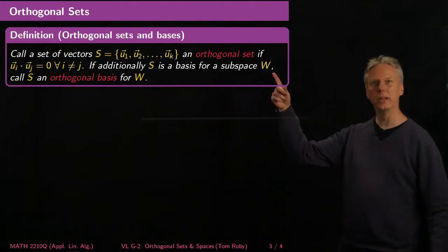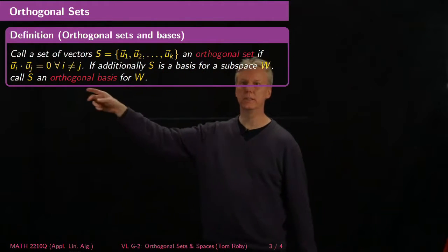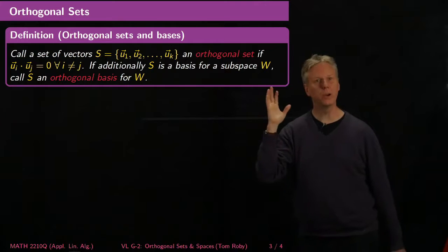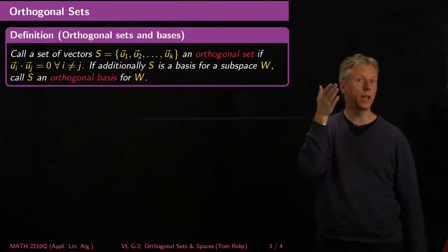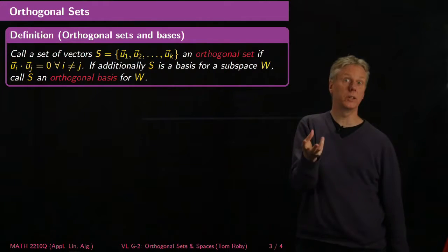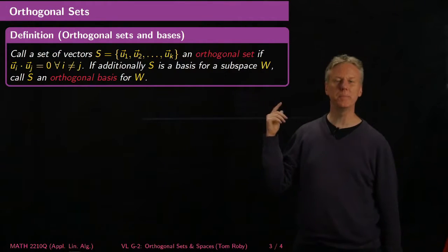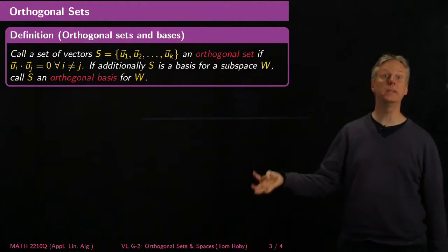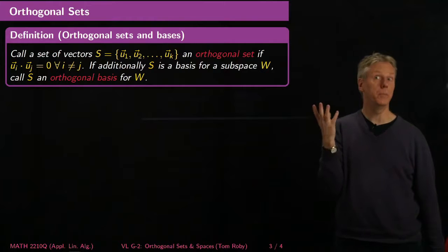Here's the definition of an orthogonal set and bases. We'll call a set an orthogonal set if any time I take two different vectors in the set and dot them with each other, I get zero — in other words, the vectors in the set are pairwise orthogonal. If I've got k vectors, then I have to do k choose 2 different checks to make sure all those dot products are zero. Of course, when I take the dot product of something with itself, I should get something non-zero. If in addition S is a basis for a subspace W, then we'll call S an orthogonal basis for W. Orthogonal sets that aren't bases for the whole space they live in are orthogonal bases for their span.